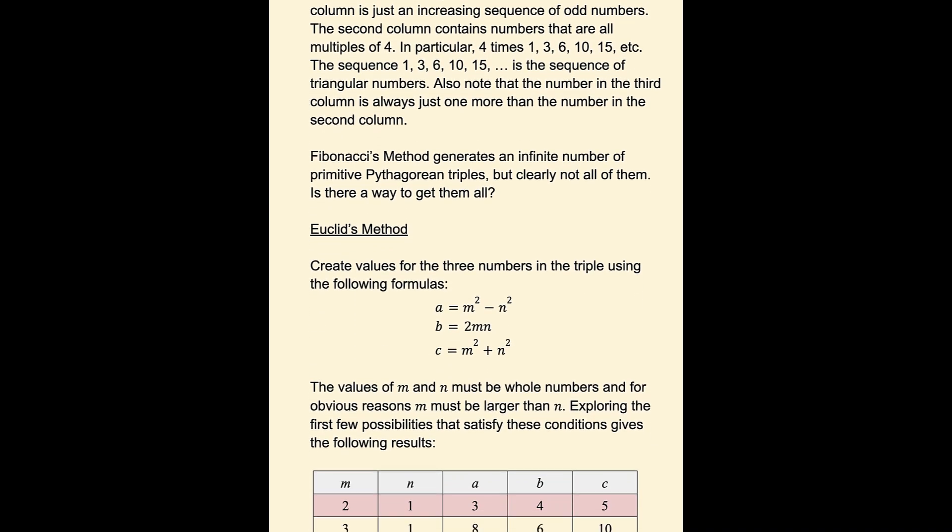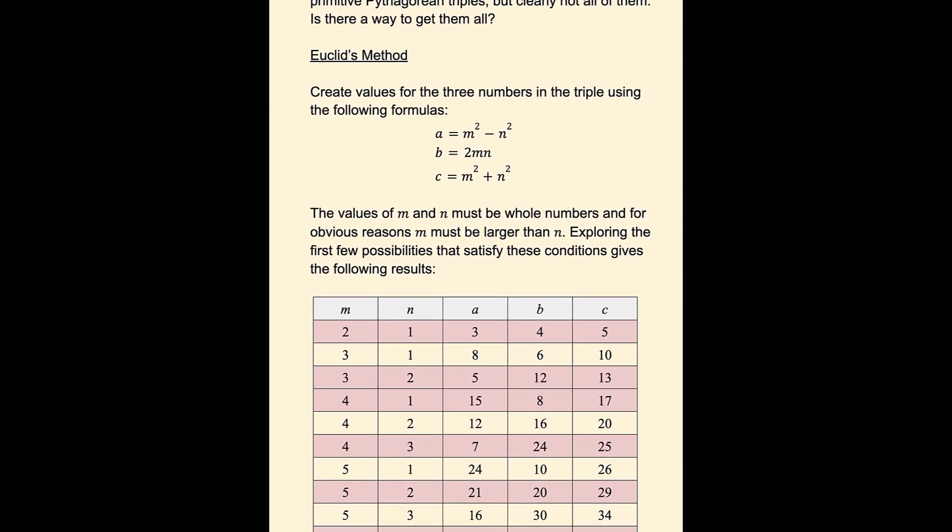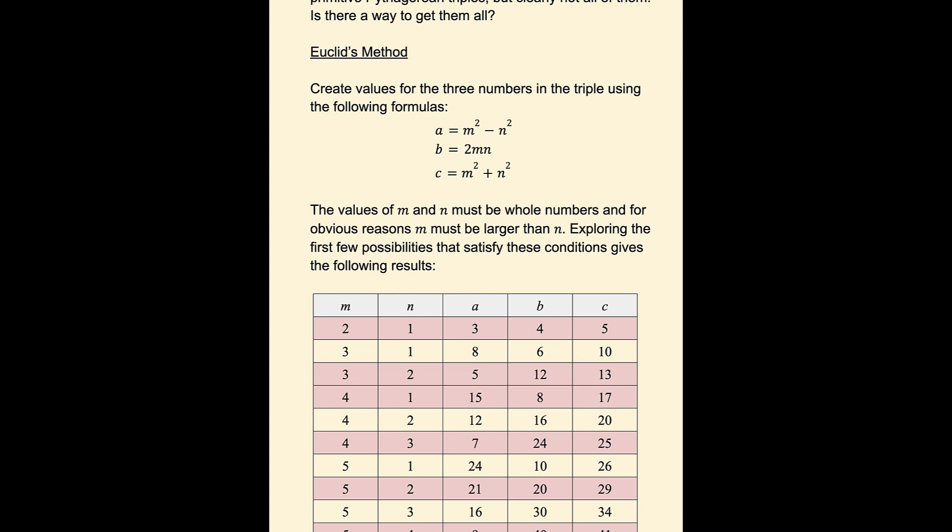Euclid was another ancient Greek mathematician. He wrote about 300 years after Pythagoras, and he came up with a method for generating Pythagorean triples.